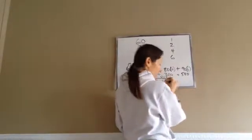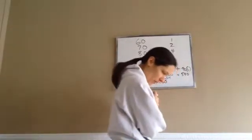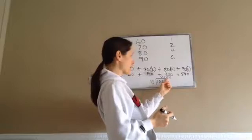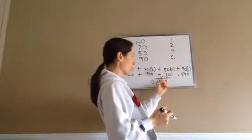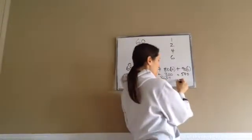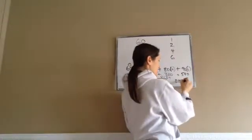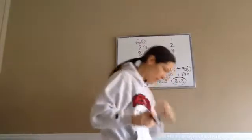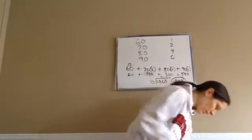81.54 — since the 5 is 5 or above, we round that 81 to an 82%. That's how that works.